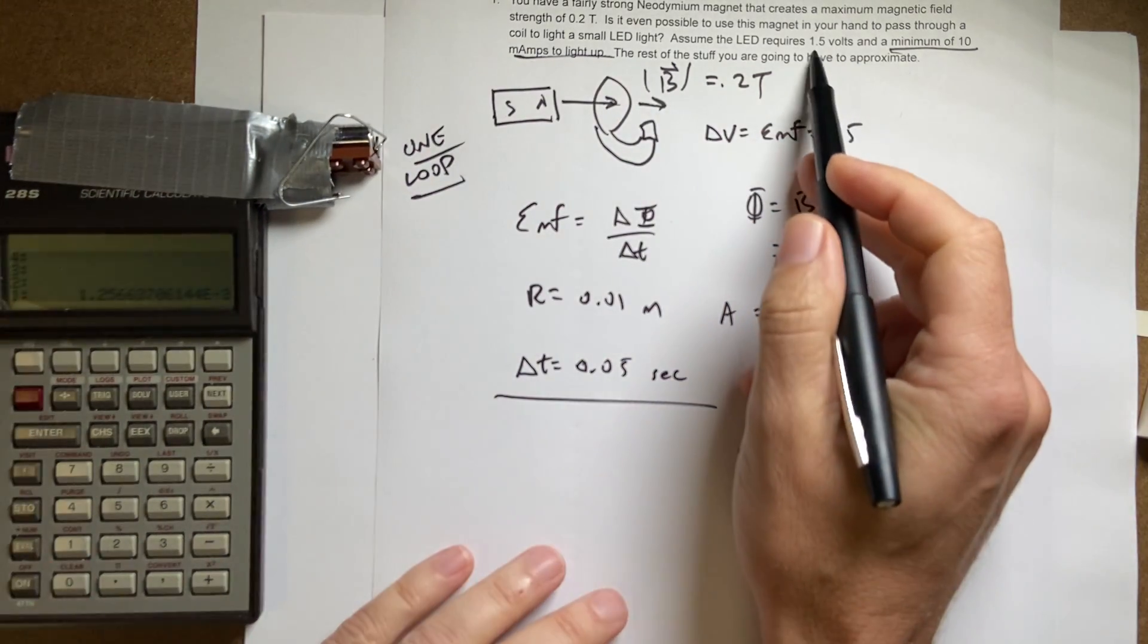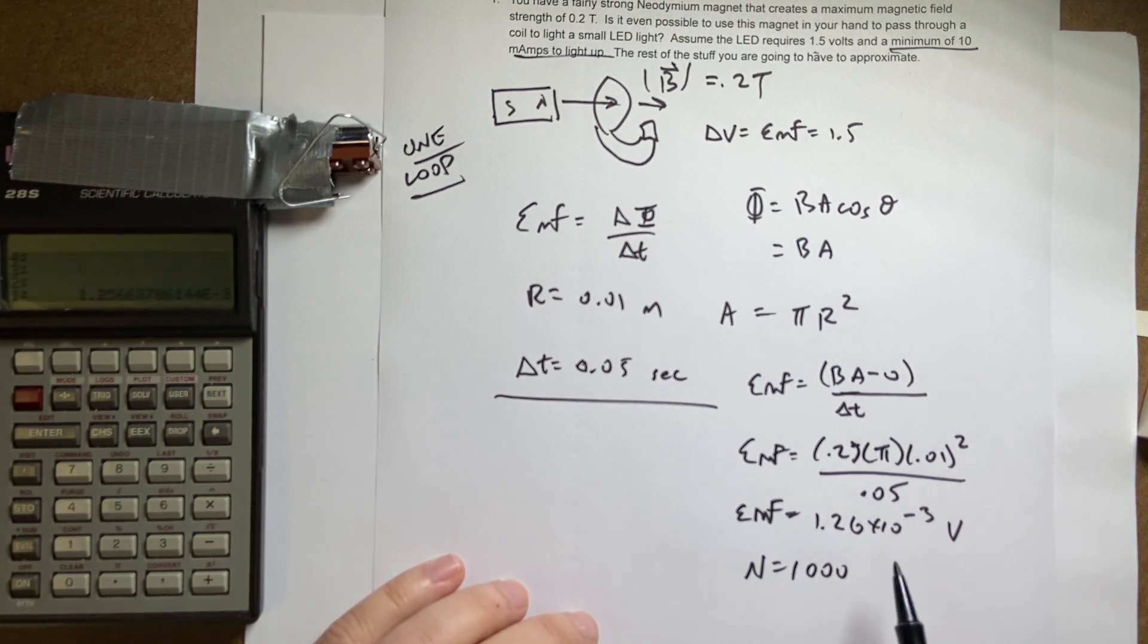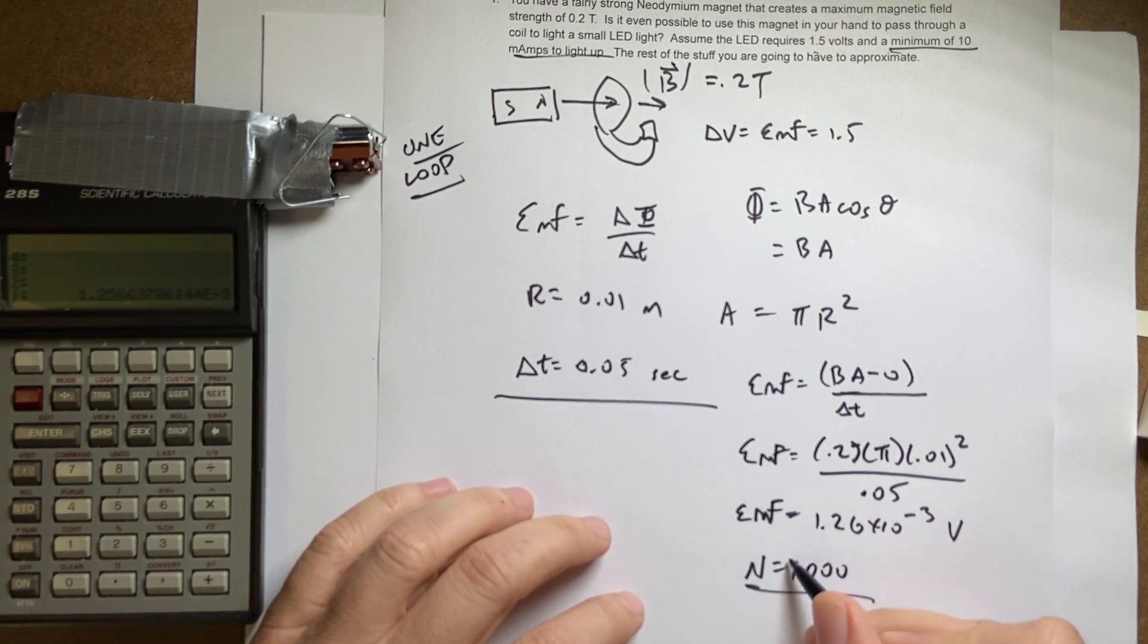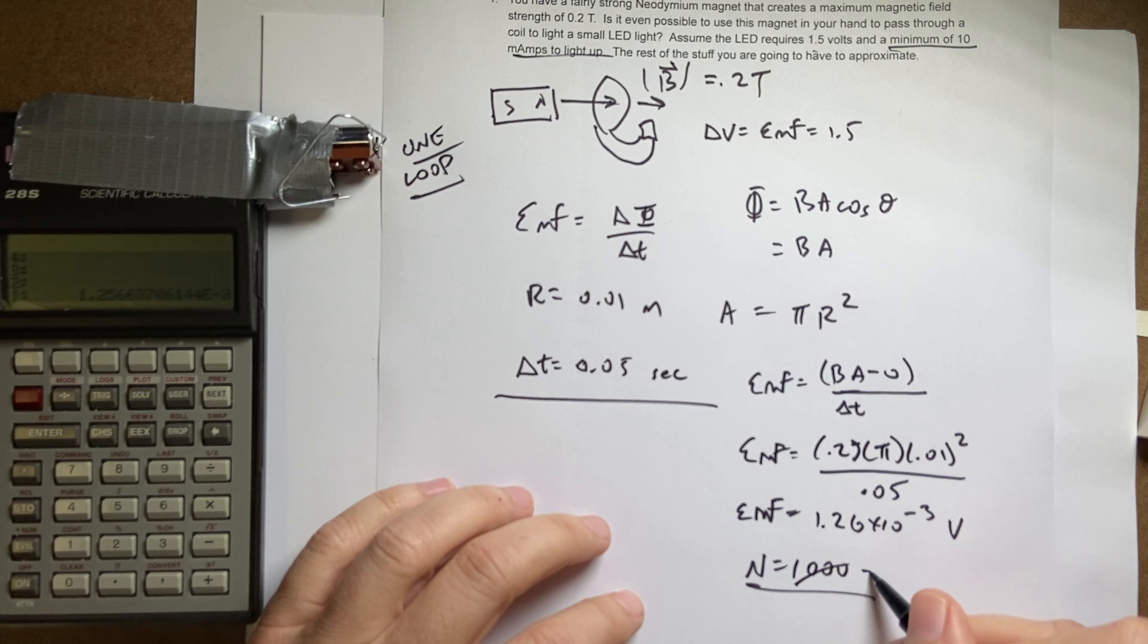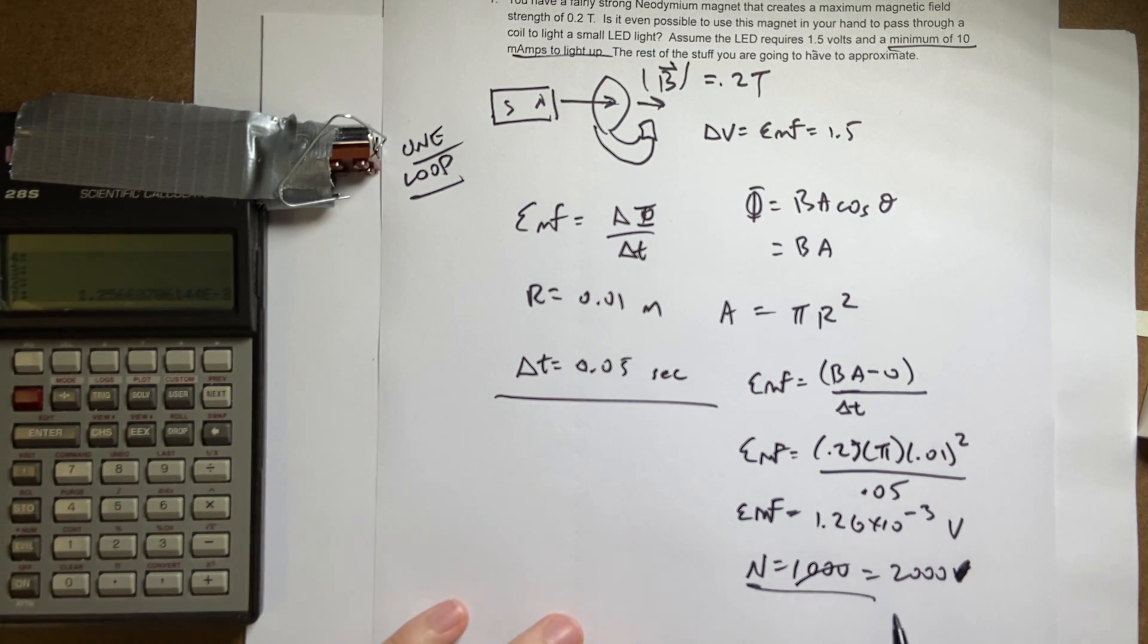So what if I want to get 1.5 volts? Well, I would need N equals 1,000. So I think if you did it this way, if I had N equals 1,000 actually more than that. So let's say N equals 2,000, 2,000 turns. Then I would get over 1.5 volts. Now, would that be enough current? I'm not going to even address that. I'm okay if you got this far.